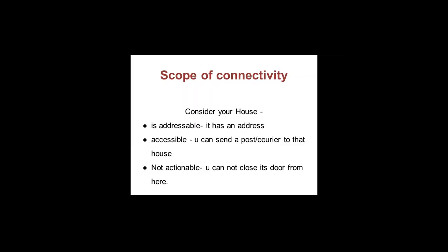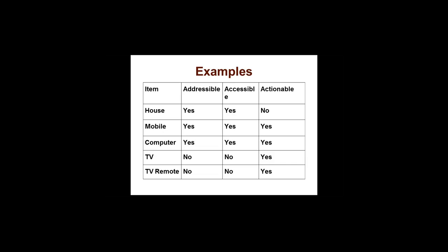Consider your house: it is addressable because it has an address. Since it has an address it is accessible — you can give the address to a courier or a friend. But it is not actionable — you cannot sit in a webinar and remotely close your door. The objective of IoT is to make everything addressable, accessible, and actionable. A table illustrates this: a house is addressable and accessible but not actionable. Your mobile is addressable (phone number), accessible (you can call it), and actionable (you can add credit remotely). A computer is addressable, accessible, and actionable — you can connect remotely and download to your home computer.